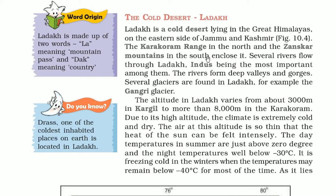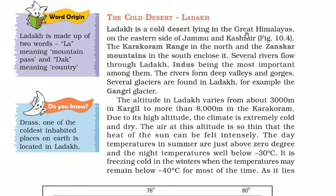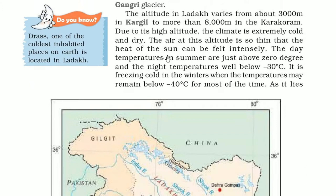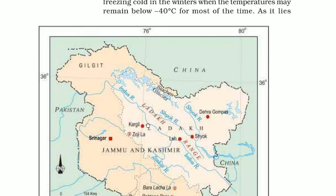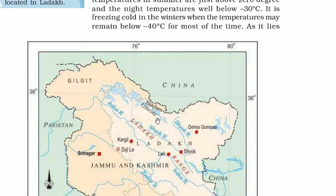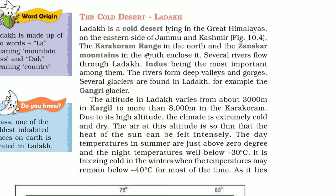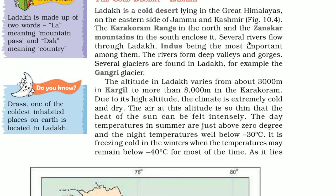Ladakh - the cold desert. Ladakh is made up of two words: La, meaning mountain pass, and Dak, meaning country. Ladakh is a cold desert lying in the Great Himalayas, on the eastern side of Jammu and Kashmir. The capital is Leh. The Karakoram Range in the north and the Zanskar Mountains in the south enclose it. Several rivers flow through Ladakh, with the Indus being the most important.